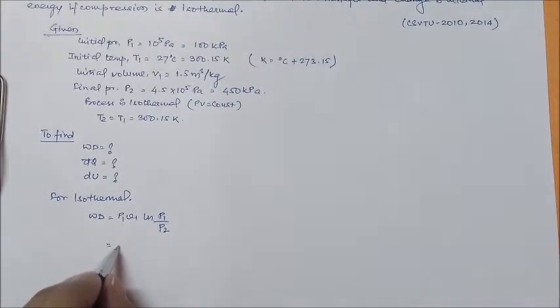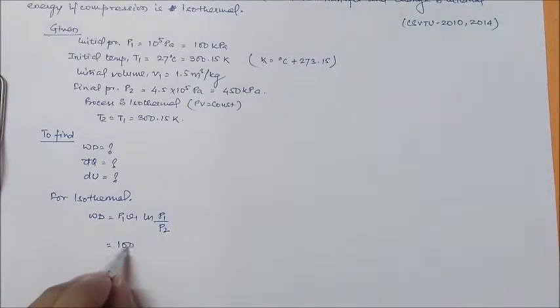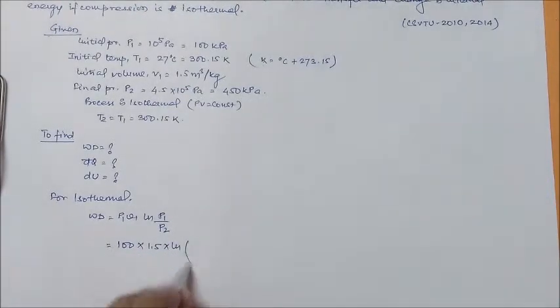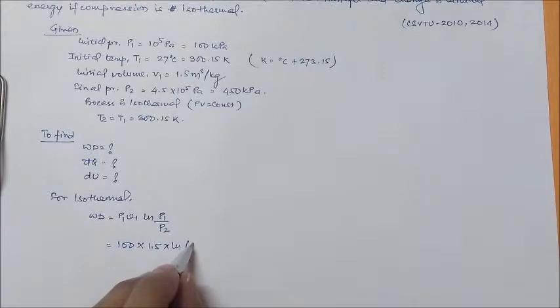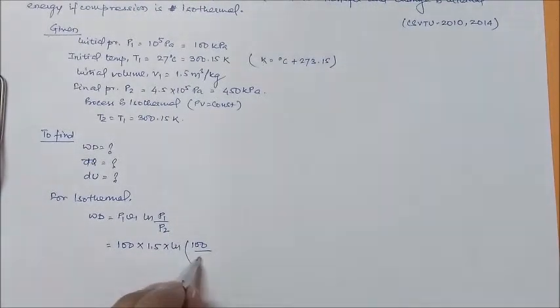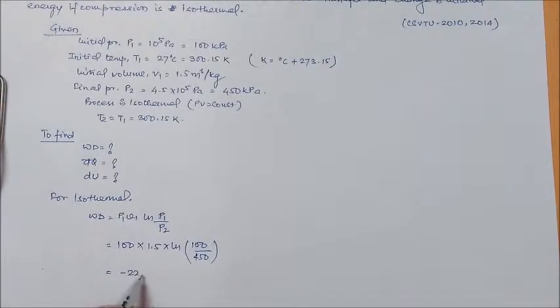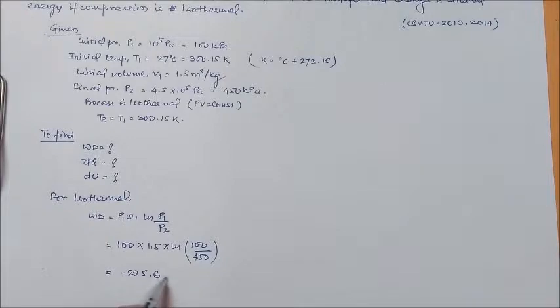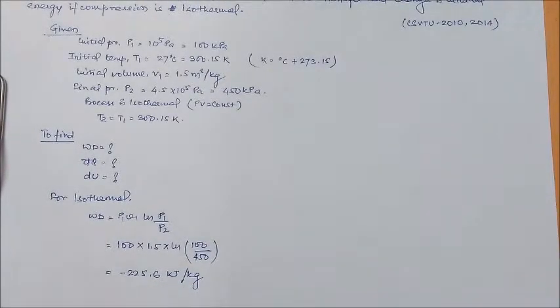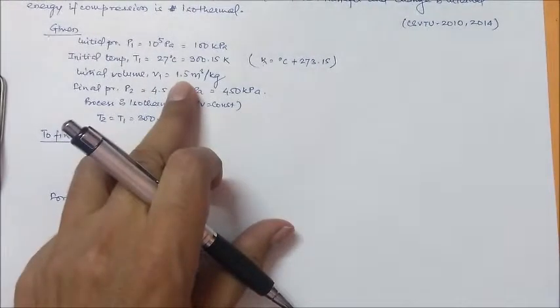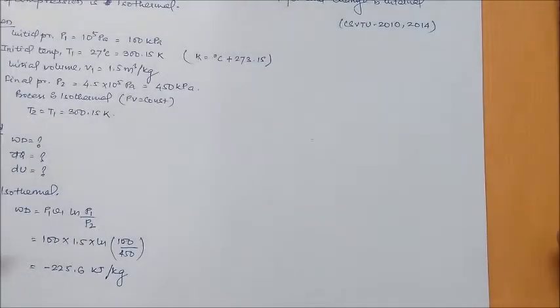So, P1 given in the question is 100 kilopascal, V1 is 1.5. P2 is 450 kilopascal. Putting these values in the formula, we are getting minus 225.6 kilojoule per kg as work done in per kg terms because volume is in per kg.